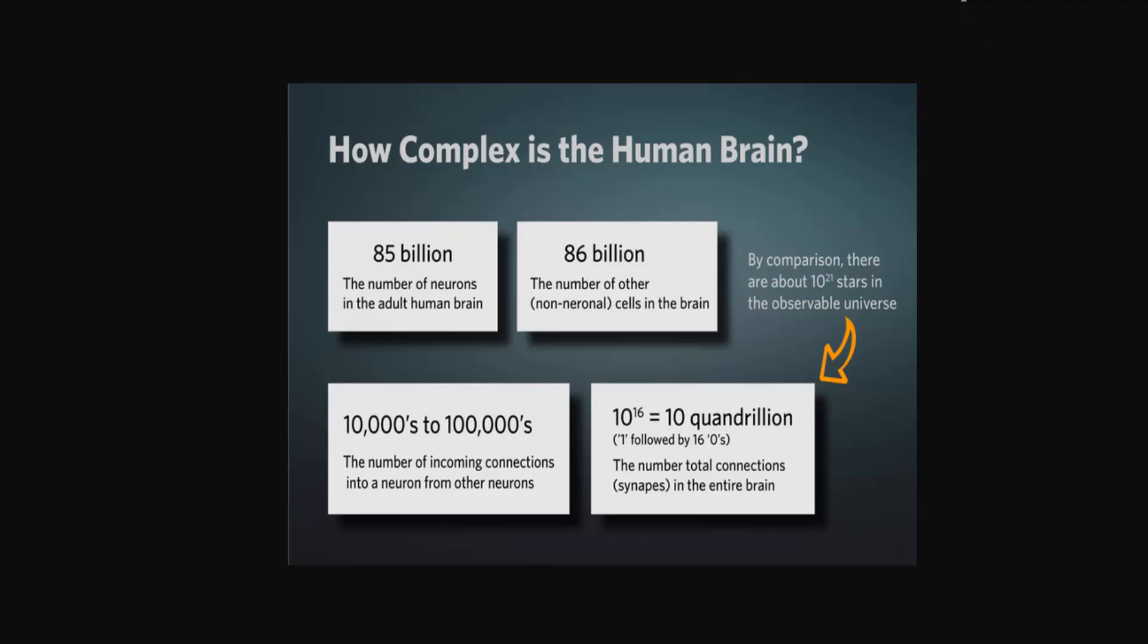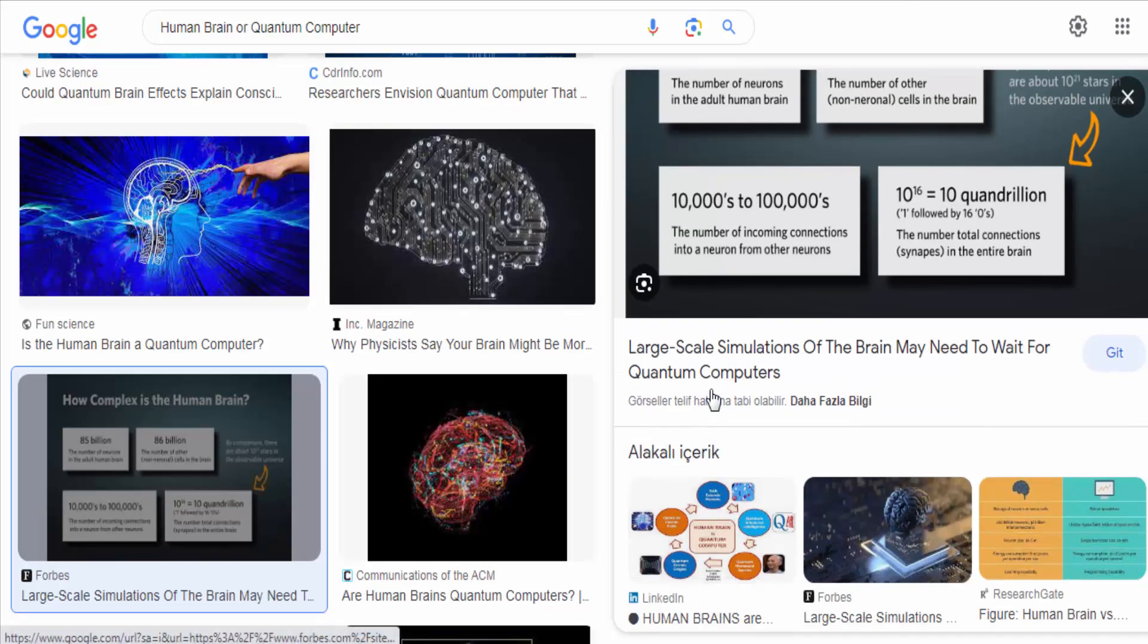In summary, the human brain and quantum computers are fascinating in their own right, but they are distinct entities with different structures and capabilities.